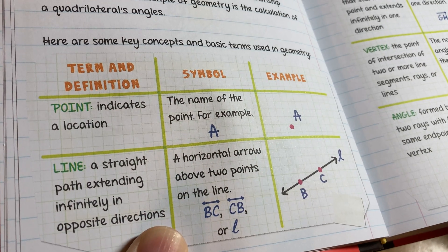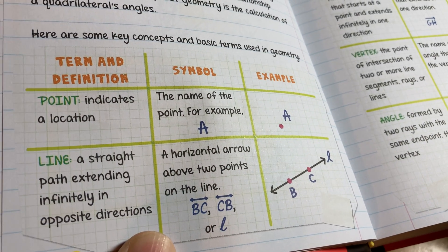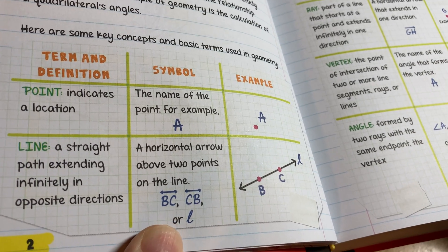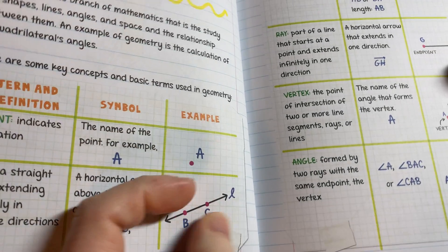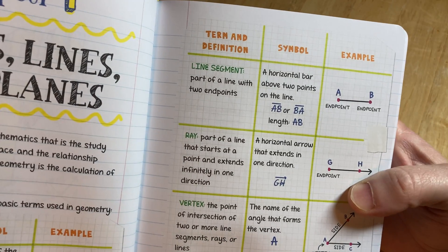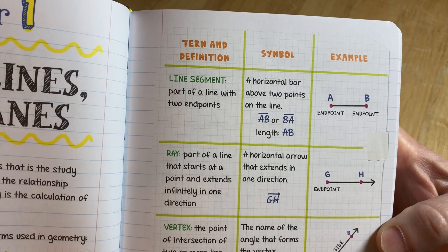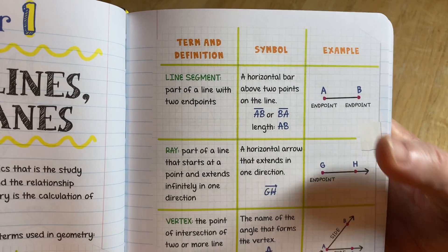Example: line—a straight path extending infinitely in opposite directions. The symbol is a horizontal arrow above two points on the line, and then it's got a line here. Line segment: a part of a line with two endpoints, a horizontal bar above two points on the line.